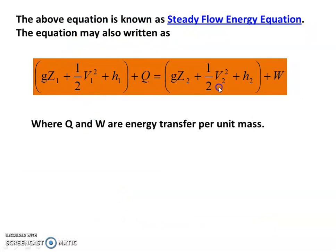The equation to remember for problem solving: G Z1 plus half V1 squared plus H1 plus Q equals G Z2 plus half V2 squared plus H2 plus W, where Q and W are energy transfer per unit mass in joules per kilogram. Z values are in metres, V is velocity in metres per second, enthalpy in joules per kilogram. Values in problems may be given as kilojoules per kilogram.